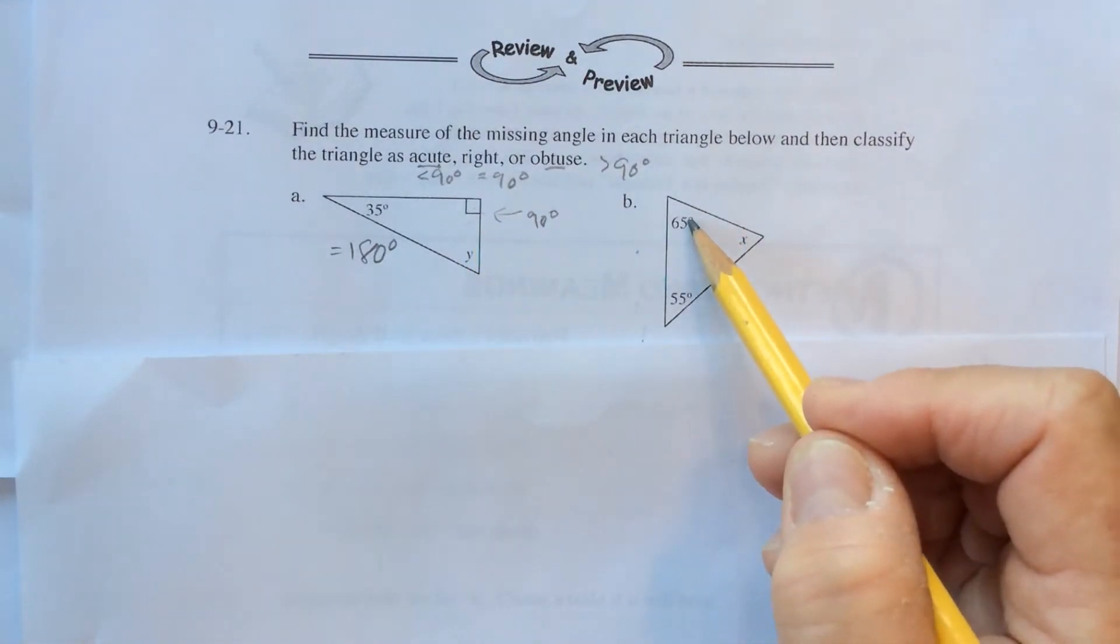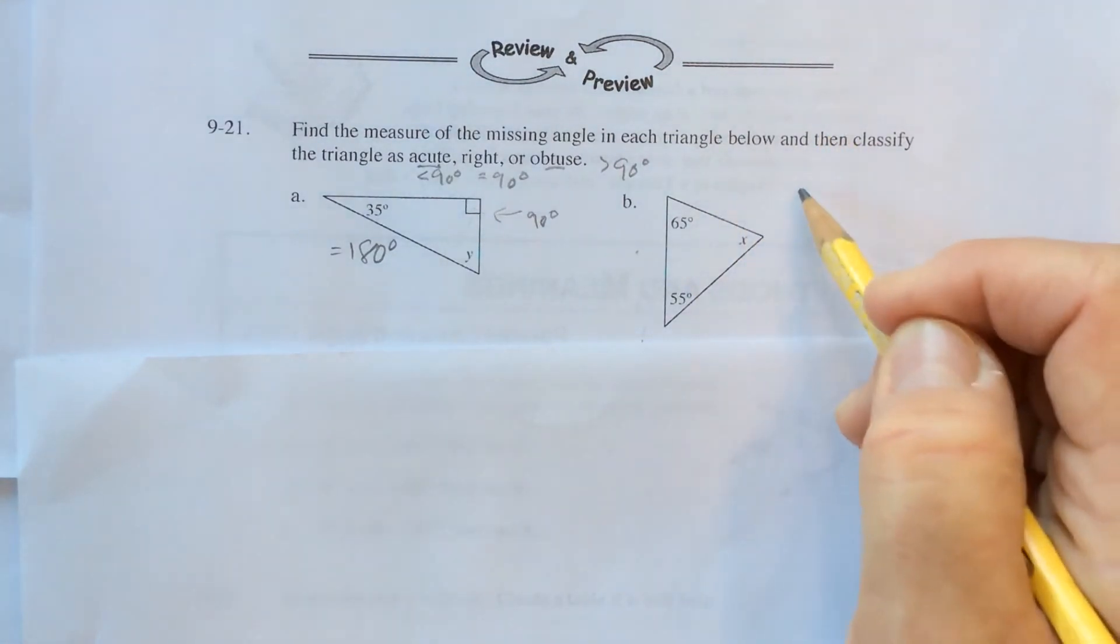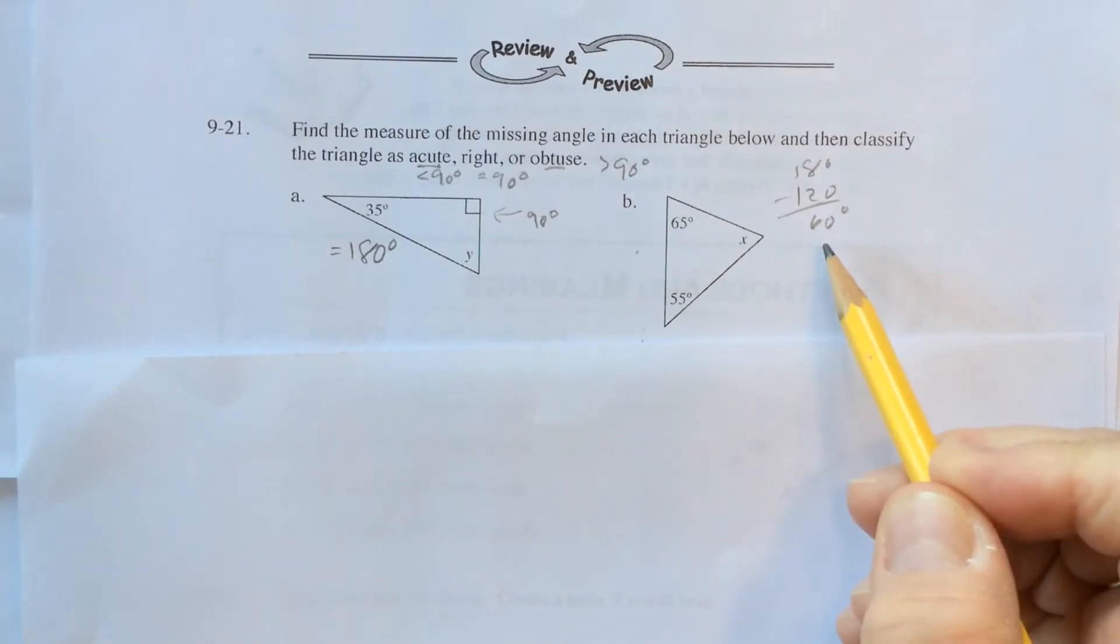Let's take a look at this one, 65, 55. Those add up to 120. If you subtract that from 180, you get 60. 60 is less than 90 degrees, which makes this an acute triangle.